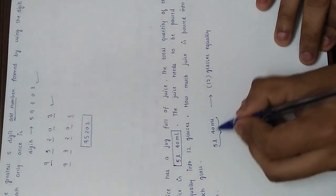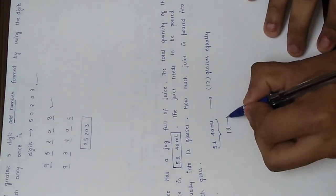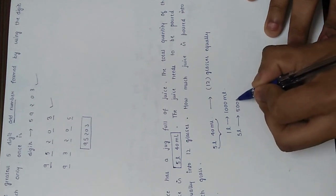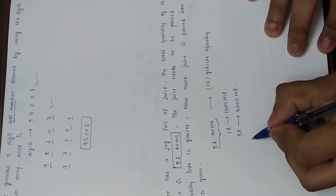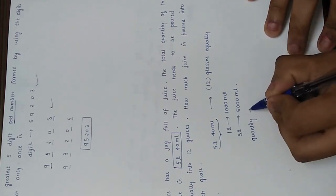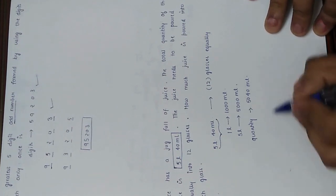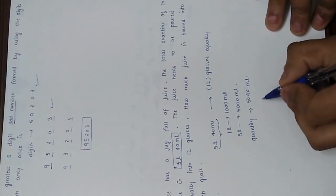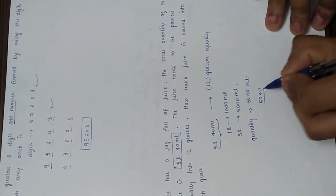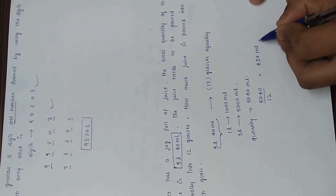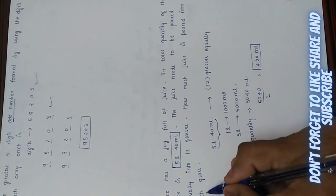We can't divide directly because the quantity has two units, so we convert to a single unit. We know one liter is 1000 milliliters, so 5 liters equals 5000 milliliters. The total quantity of juice is 5000 + 40 = 5040 milliliters, and we divide this by 12.